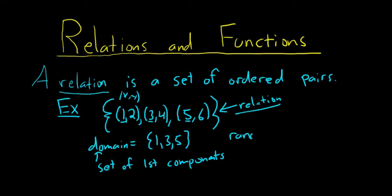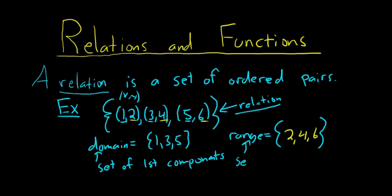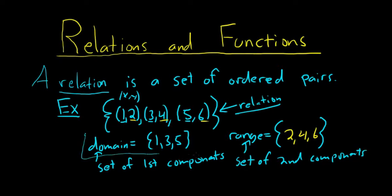And then the range is the set of second components. So in this case the range would be 2, 4, 6. So to recap: a relation is simply a set of ordered pairs. The domain is the set of first components — here that's 1, 3, 5. And the set of second components is called the range — that's 2, 4, 6.